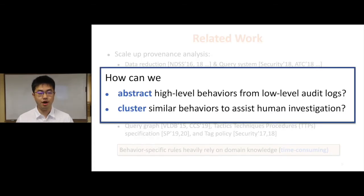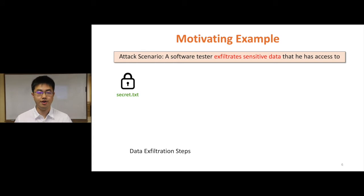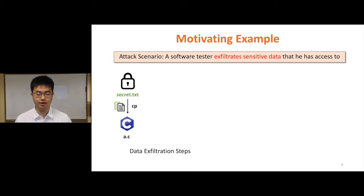In this work, we try to answer: how can we abstract high-level behaviors from low-level audit logs, and then cluster similar behaviors to assist attack investigation? We use a motivating example to introduce our goal of behavior abstraction and its challenges. The test scenario is that a software insider exfiltrates sensitive data that he has access to, and this attacker tries to disguise the data exfiltration behavior as a common program development procedure. To do this, he first locates the secret.tst file, and then copies it to his own working directory as a source file. After that, he compiles this source code.